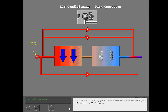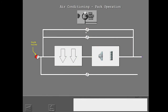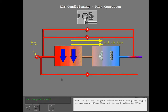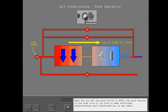When you set the pack switch to off, the pack valve closes fully and bleed air does not go into the air conditioning pack. When you set the pack switch to high, the packs supply the maximum air flow. When you set the pack switch to auto, the pack adjusts to high flow or low flow to keep sufficient pressurization and conditioned air in the cabin.